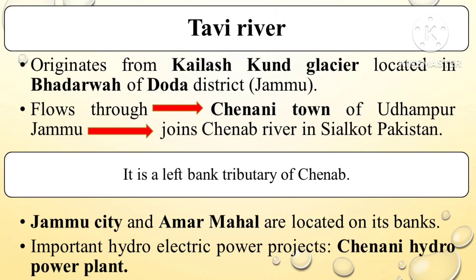The Tavi River originates from the Kailashkund Glacier, located in Bhadarwah of Doda district. It flows through Chinani town of Udhampur to Jammu, and then joins the Chenab River in Sialkot, Pakistan. An important hydroelectric power project on this river is Chinani.